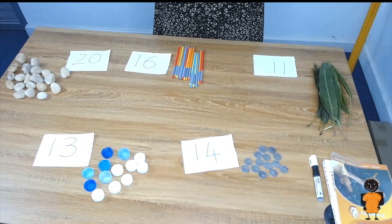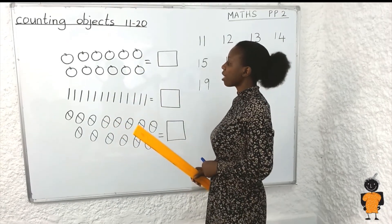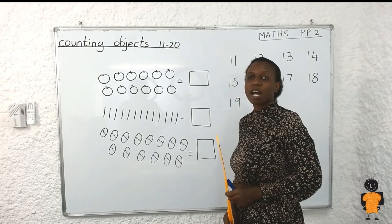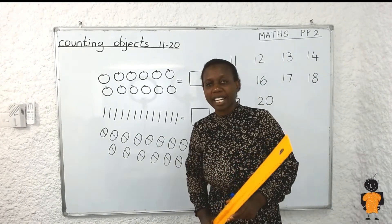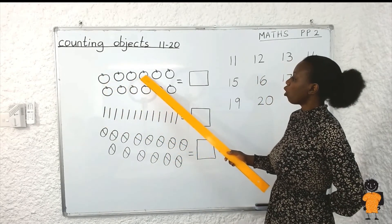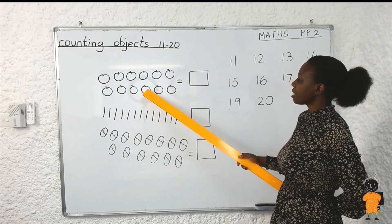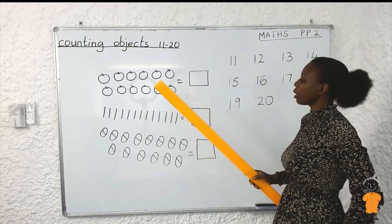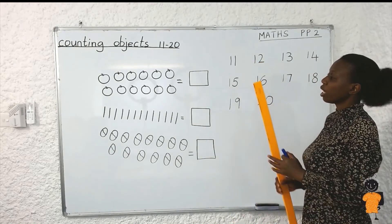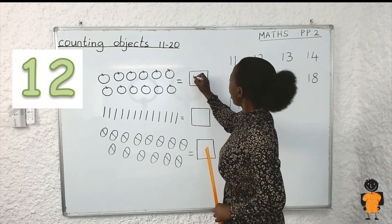I want to give you some work on the board. We have some objects here — are you able to recognize them? We have apples, sticks, and eggs. Let us count the apples together. Are you ready? One, two, three, four, five, six, seven, eight, nine, ten, eleven, twelve. We have 12 apples, and 12 is written as 1 and 2. So you write the number on the board: one and two, number 12.